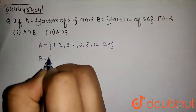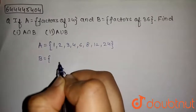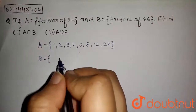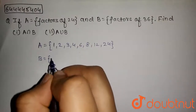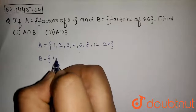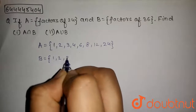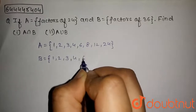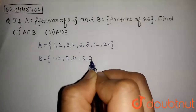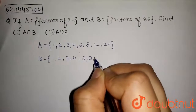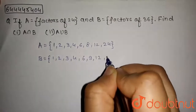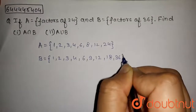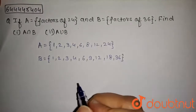B set will contain factors of 36, and the factors of 36 are 1, 2, 3, 4, 6, 9, 12, 18 and 36.